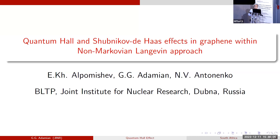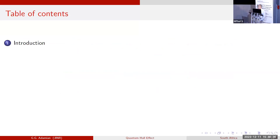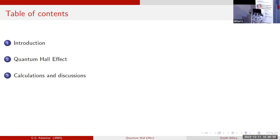You probably know these effects, but in a great two-dimensional, one-layer material — that is graphene — within a non-Markovian Langevin approach. My co-authors are from the Bogolyubov Laboratory of Theoretical Physics. I will have a small introduction, speak about the quantum Hall effect and Shubnikov-de Haas effect, then calculations and discussions, a bit about thermal conductivity, and conclusions.